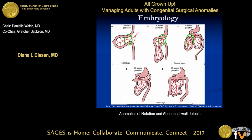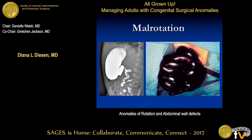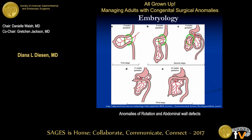So, malrotation — brief review of embryology. If you remember when you were a six-week-old fetus, your intestines were actually outside of your abdominal cavity. Then over the subsequent few weeks, they elongated and rotated 270 degrees in order to have the duodenum fixed at the left upper quadrant and the cecum fixed at the right lower quadrant. The intestinal contents then went back into the abdomen, and ideally your abdominal wall closed. If you do not have this rotation, you are malrotated. So duodenum here, cecum there.